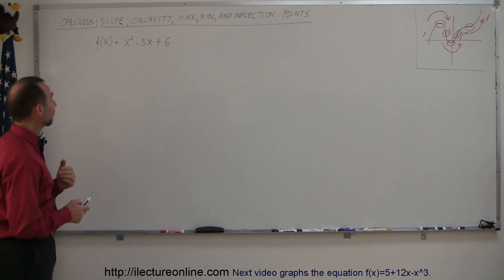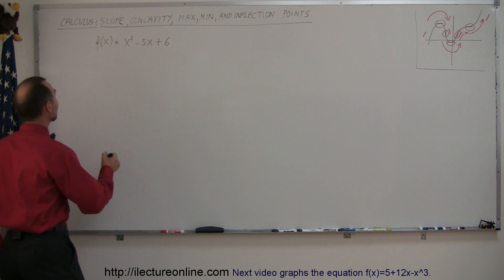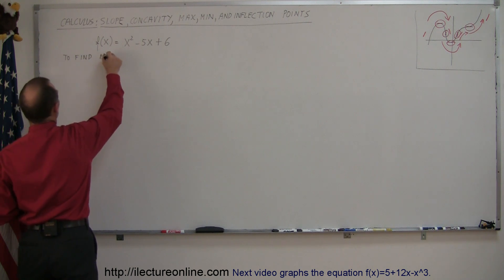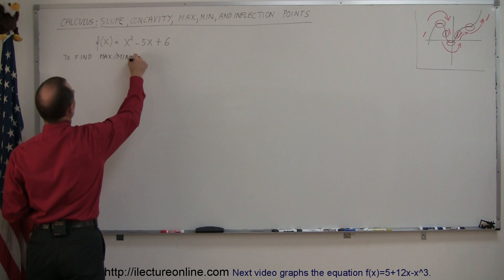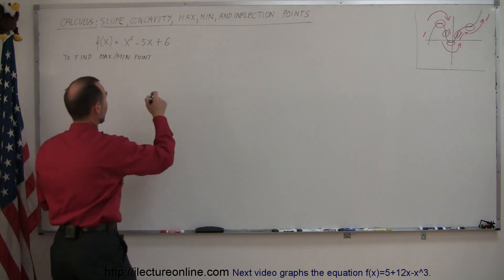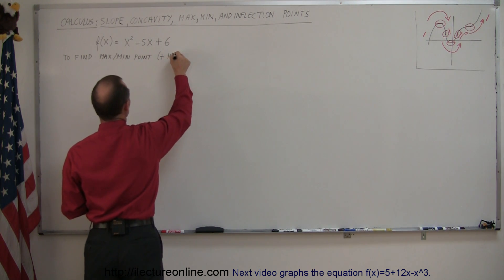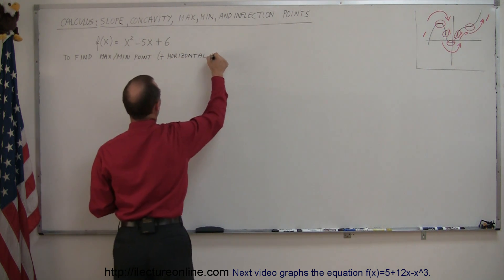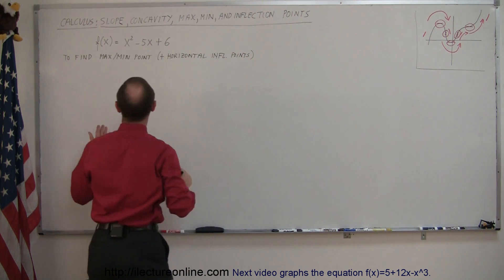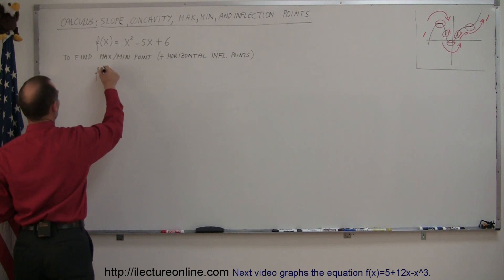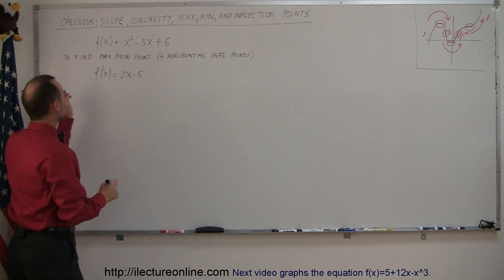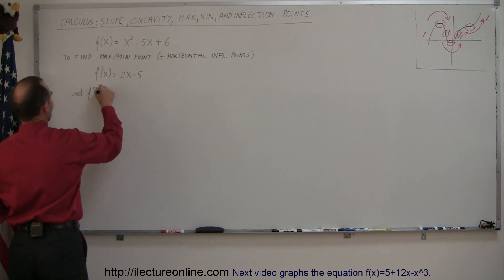The first thing you want to do is find the max and min points on the graph, and you can do that by finding the first derivative. To find max or min points, and also horizontal inflection points, you're going to take the first derivative. So you get f prime of x, which is equal to 2x minus 5. Then, to find those points, you set f prime of x equal to 0.